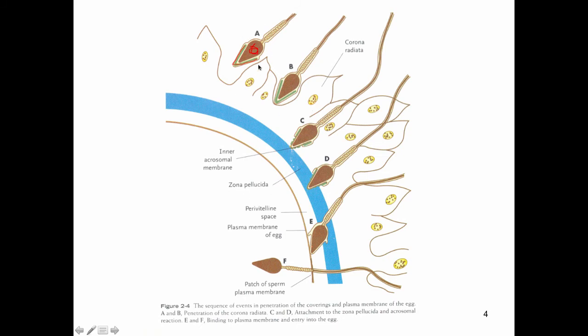Fertilization can be defined in a few ways: the instant that sperm and ovum fuse; the time between fusion of the sperm and egg and the formation of a diploid fertilized zygote; or the time between the formation of the zygote and the first mitotic division, which takes about 24 hours. All of these definitions are valid.